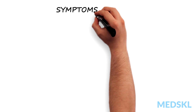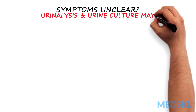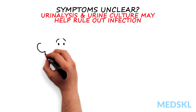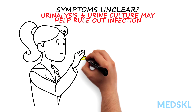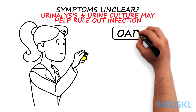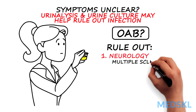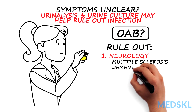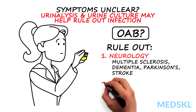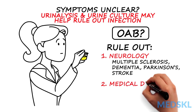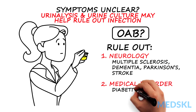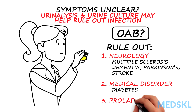In patients whose symptoms are unclear, urinalysis and urine culture may help rule out infection. If symptoms point to OAB, you should rule out: 1. Neurologic disorders such as multiple sclerosis, dementia, Parkinson's disease, or stroke. 2. Medical disorders such as diabetes. 3. Prolapse, as women with obstructed voiding, usually from advanced prolapse, can have symptoms that mimic those of OAB.